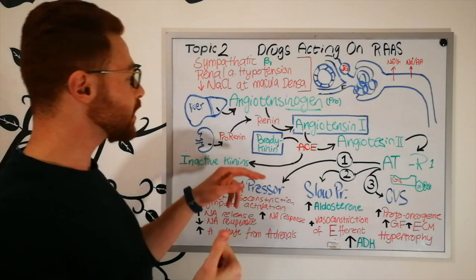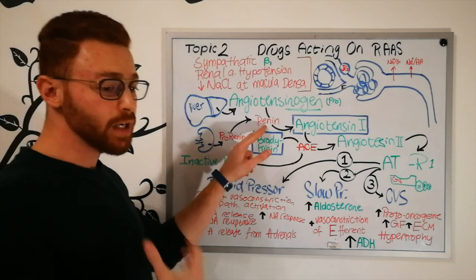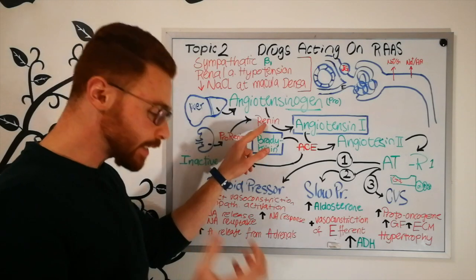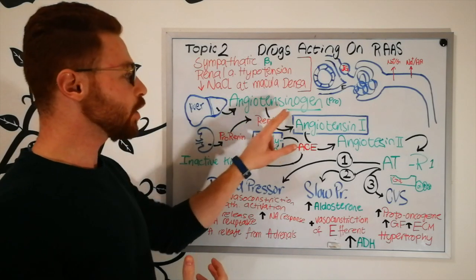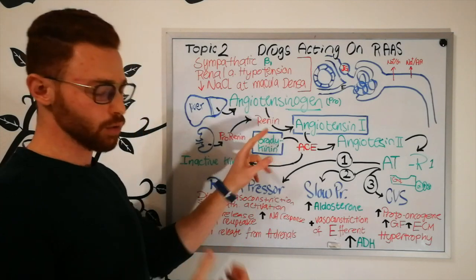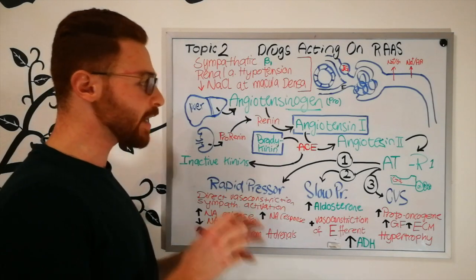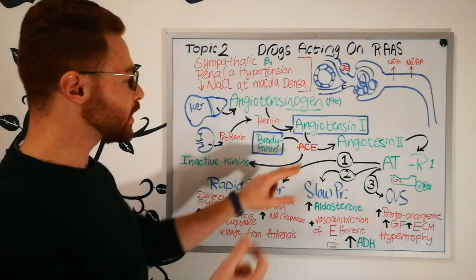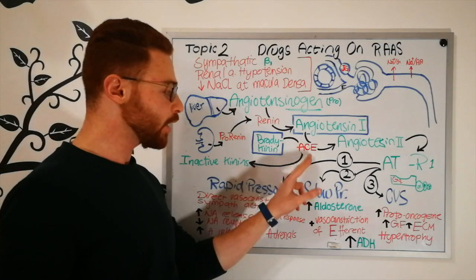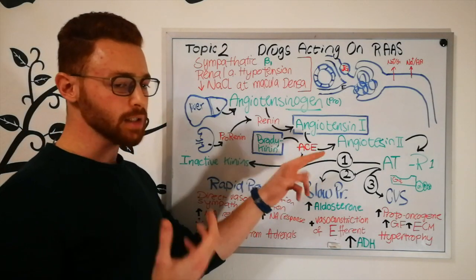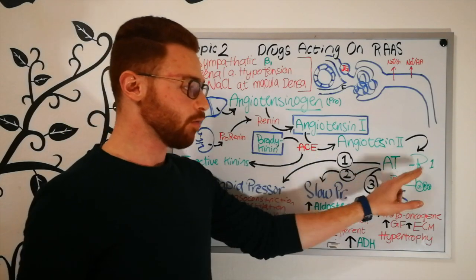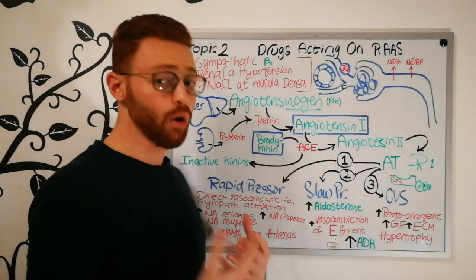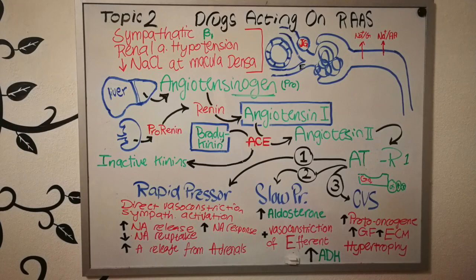The categories of drugs we'll cover are: first, renin inhibitors, which block angiotensinogen binding to renin; second, ACE inhibitors, which block the angiotensin-converting enzyme; and third, angiotensin receptor blockers (ARBs), which block the AT1 receptor.